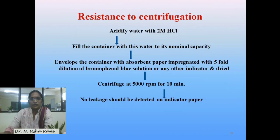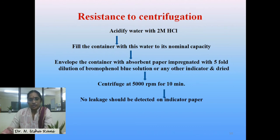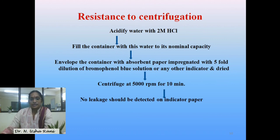For the test for resistance to centrifugation, acidify water with 2 molar HCl and fill this acidified water into the container up to its nominal capacity. Envelope the entire container with paper impregnated with a bromophenol blue dye solution. Place it in a centrifuge and centrifuge at 5000 rpm for 10 minutes. No leakage should be detected on the indicator paper. If any leakage occurs, a color change will be seen on the indicator paper, and the dye solution may enter the water inside the container.